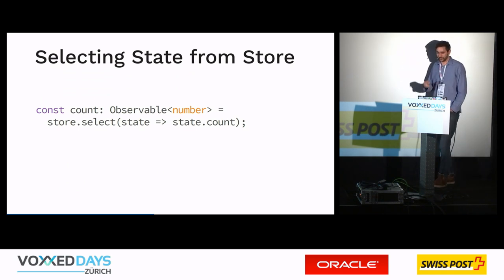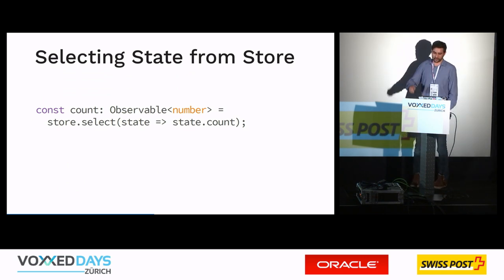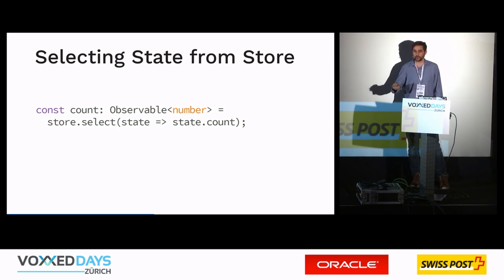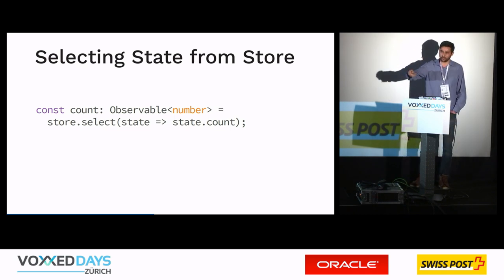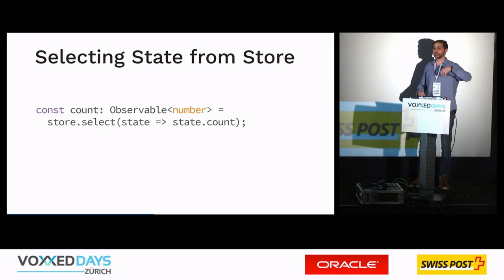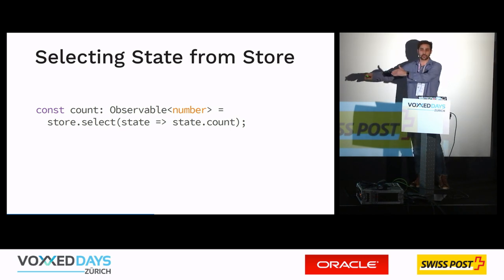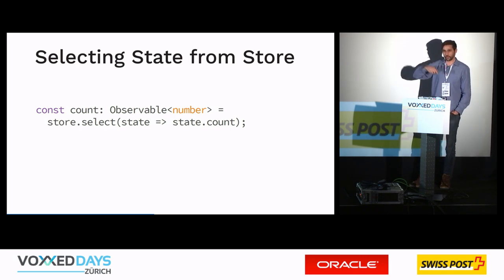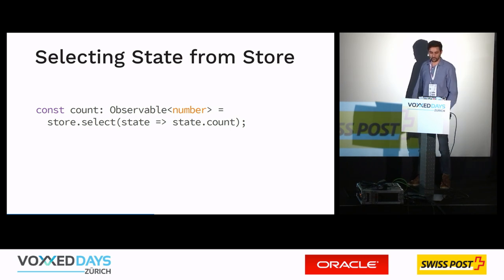To get data out of the store, since NGRx uses observables, you call store.select(), which is effectively just an observable map function. You pass a mapping function that receives the global state and sub-selects a substate, giving you a new observable pointing to that substate. When there are changes, you always get the latest values.